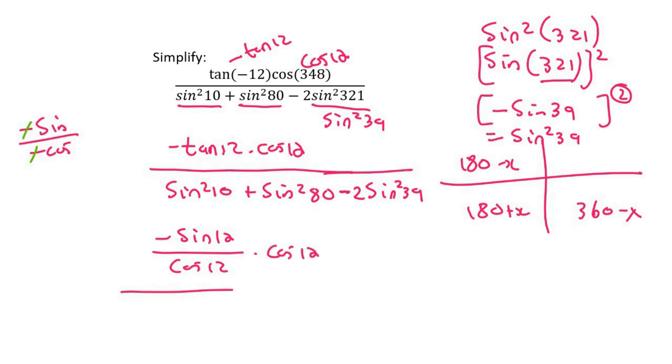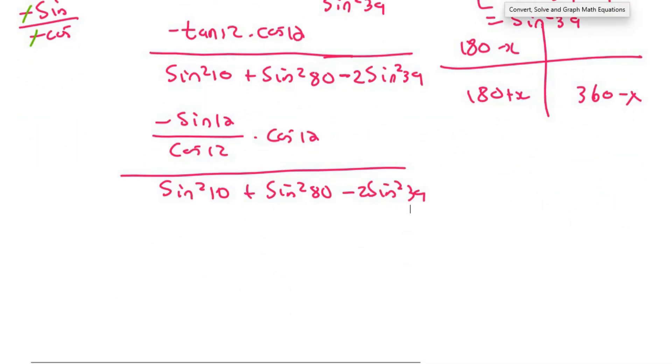And then we have this cos 12. And then at the bottom we've got sin squared of 10 plus sin squared of 80 minus 2 sin squared of 39. And so what happens now is that these cos 12s cancel out. And so at the top we're just going to be left with negative sin 12.